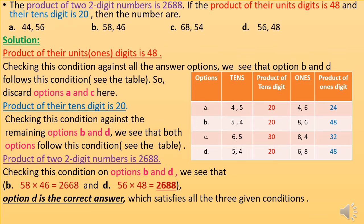The numbers in option B are 58 and 46, and their product is 2668. The numbers in option D are 56 and 48, and their product is 2688. So option D is the correct answer, as it satisfies all three given conditions.